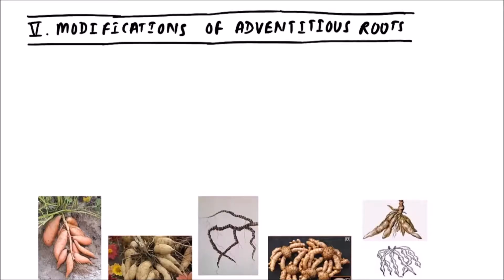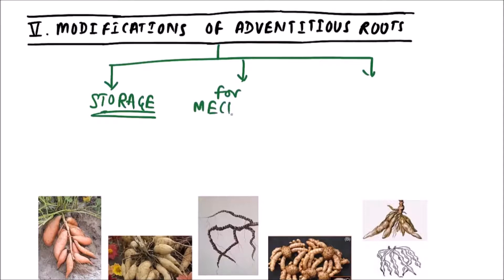Hello friends, welcome to Studio Biology. In this video we are going to discuss the various modifications of adventitious roots. Basically, adventitious roots are modified for three purposes: first one is storage, second is for mechanical support, and third one is for some vital functions like photosynthesis and reproduction.